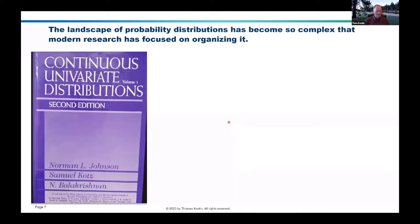This book is on the bookshelves of many or most statisticians, first published in the 70s, later revised in the 90s. I understand there's another revision they're working on. It's like 1,600 pages and tries to describe all the various continuous probability distributions.